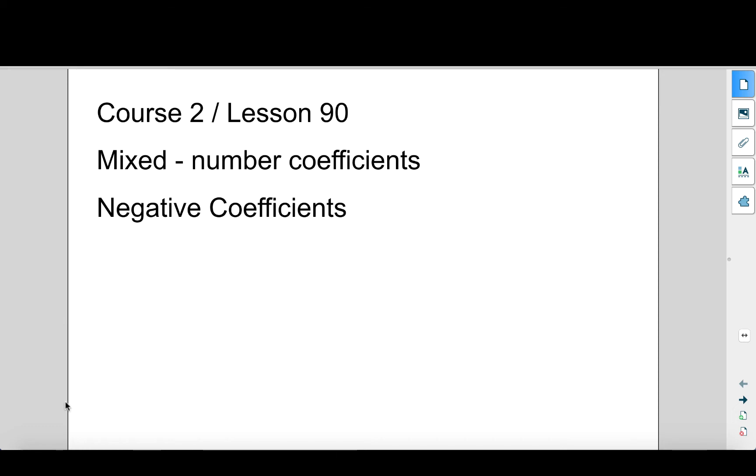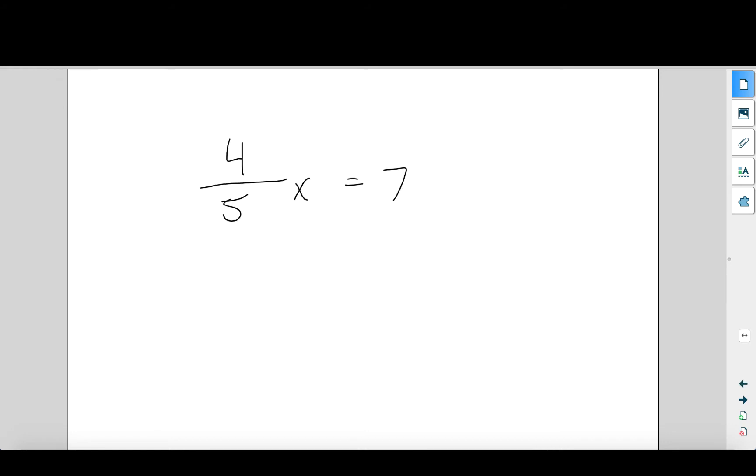All right, Saxon Math Course 2, we're in Lesson 90. Congratulations on getting to that level, to that number, that's a great lesson to be at. We're going to be dealing with mixed numbers and coefficients and something called negative coefficients today. So let's jump right in.